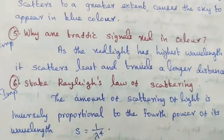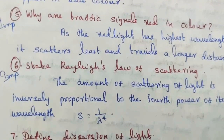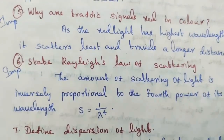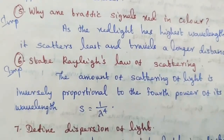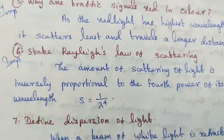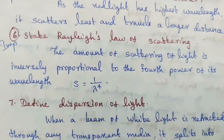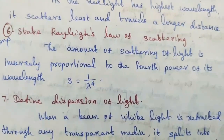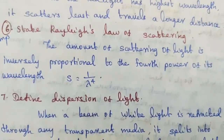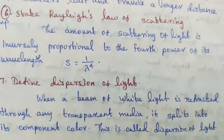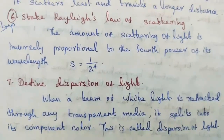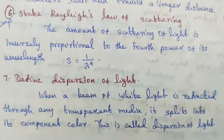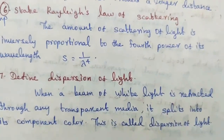Question number seven: define dispersion of light. When a beam of white light is refracted through any transparent medium, it splits into its component colors. This is called dispersion of light.